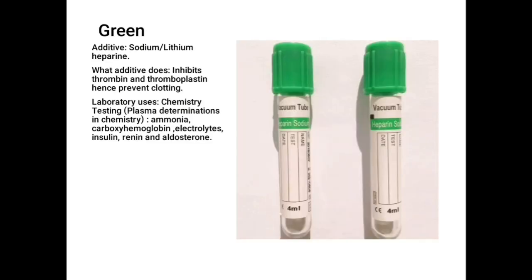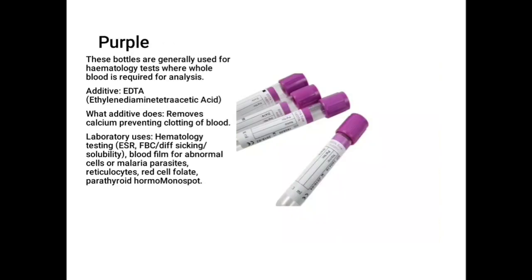A green top container has an additive which is an anticoagulant — either sodium or lithium heparin. It is used to obtain plasma when centrifuged. The difference between plasma and serum is that serum is obtained when the blood clots, whereas plasma is obtained when the blood is not clotted. The additive in the green top container also prevents clotting by inhibiting thrombin and prothrombin, making it suitable for chemistry tests.